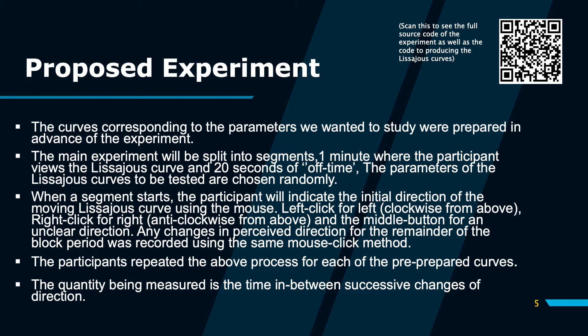The methodology of the experiment was that the user would look at the Lissajous curve for an extended period of time — say one minute — and then using the mouse button, they would denote the direction they could perceive the Lissajous curve moving: left mouse click for left, right mouse click for right. The actual quantity we were measuring was the time in between these direction changes, not necessarily the time in between mouse clicks, because you might accidentally miss-click, but the actual time in between the perceived change of direction. In the analysis, which I programmed myself, we removed any redundant or invalid clicks.